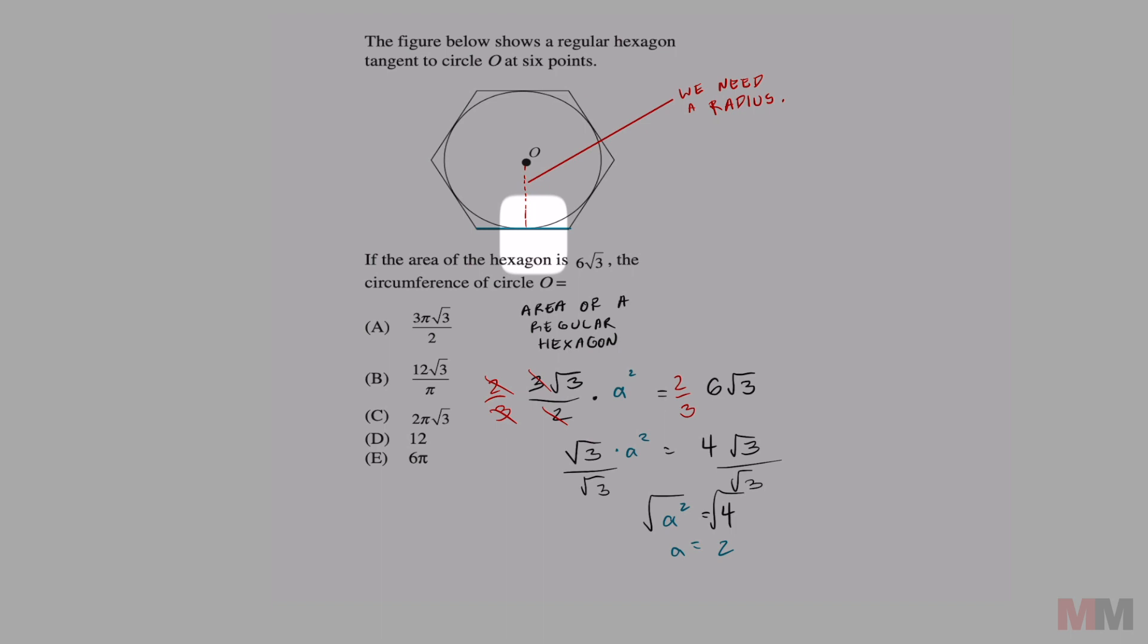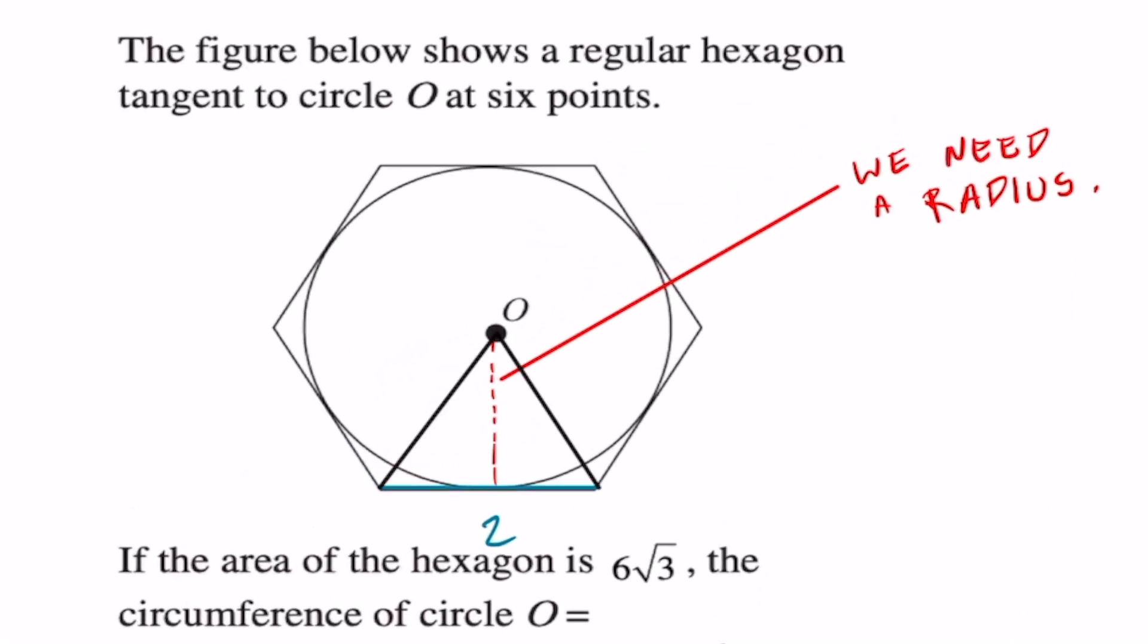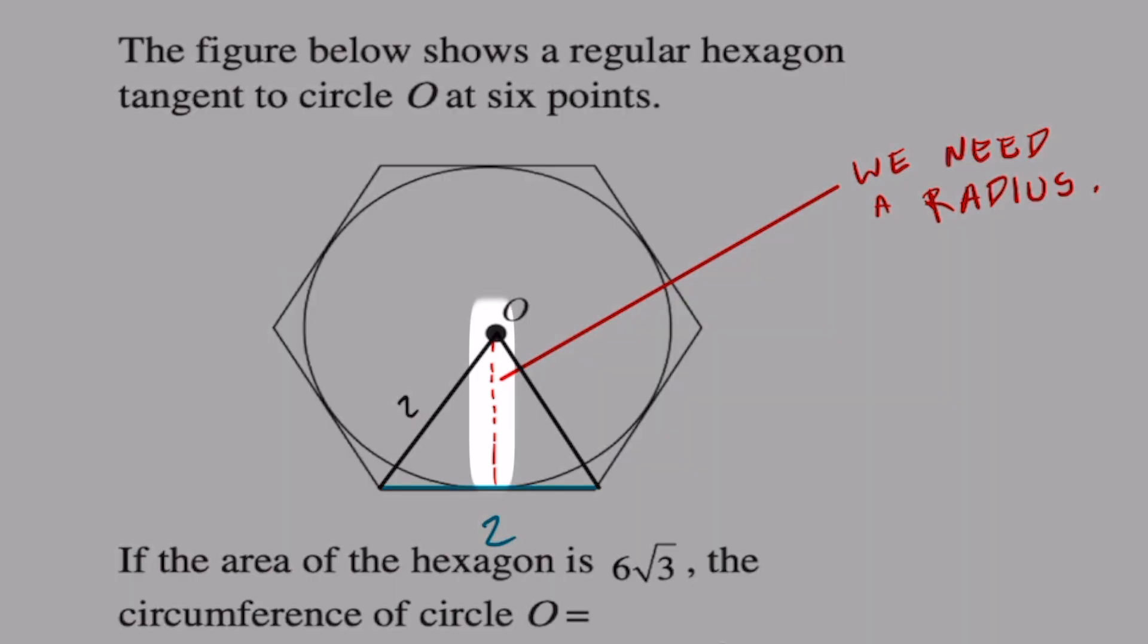Now I know that equals 2. One of the properties of a regular hexagon is that it creates six equilateral triangles inside that shape, meaning that all of these are going to equal 2. This radius that I drew here is going to cut that length in half, so that length is going to be 1.